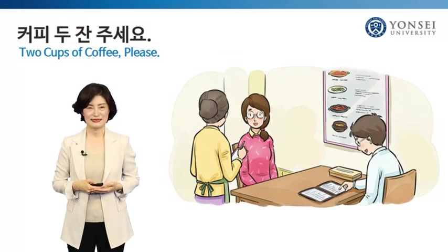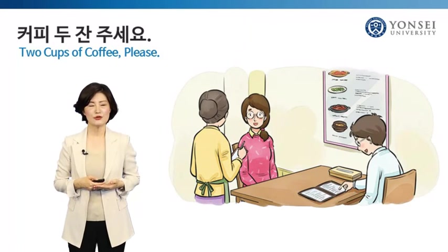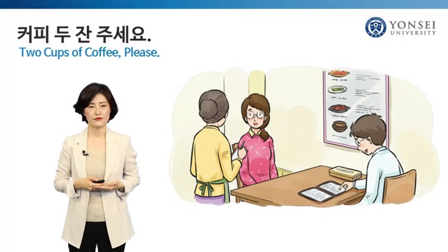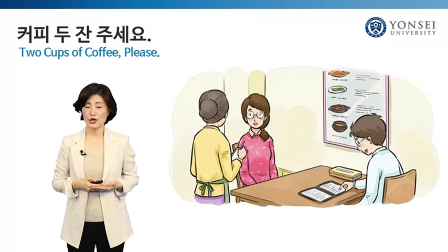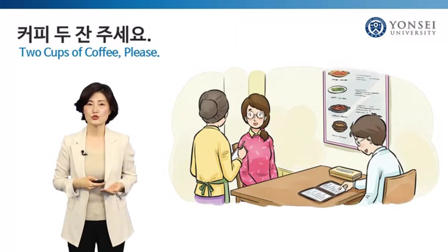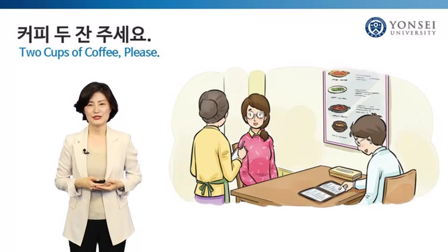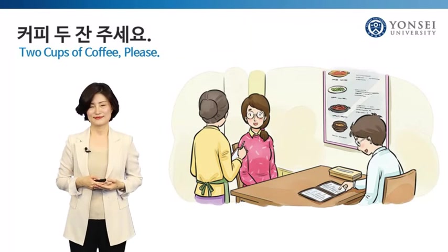How was it? In this unit, we studied how to order food and beverages using counting units. Now you can say how much food or how many drinks you want to have when you go to a cafe in Korea. In our next unit, we will continue to study how to order food in a restaurant using other expressions. 감사합니다. 안녕히 계십시오. Thank you.